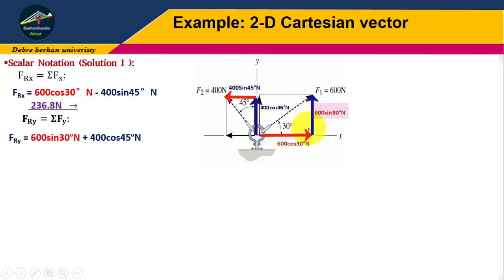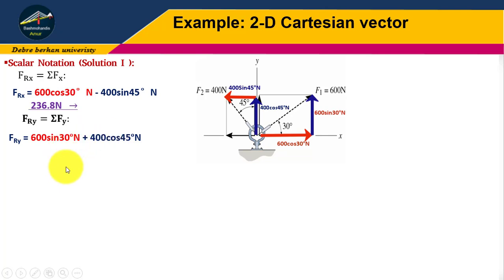For F1 the y component is 600 sin 30 degrees, and for F2 it is 400 cos 45 degrees. Both components are upward, therefore we add them. FRy equals 582.8 Newtons upward. This completes the scalar notation part, but we have not yet calculated the final resultant.